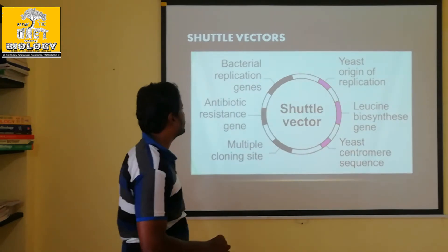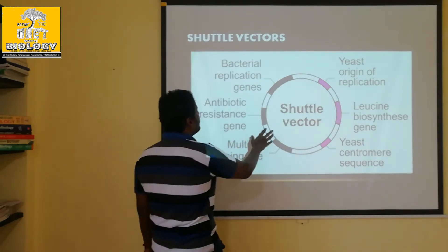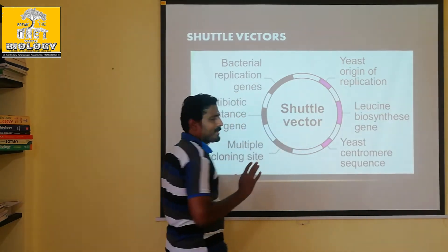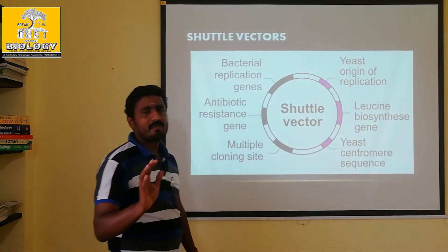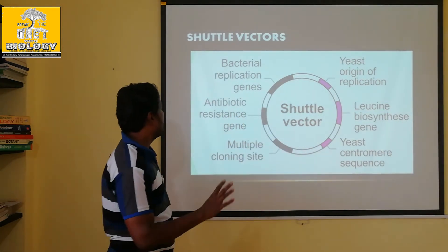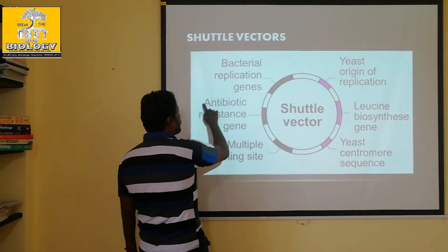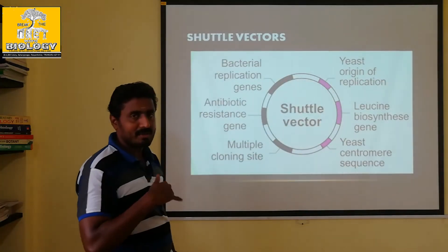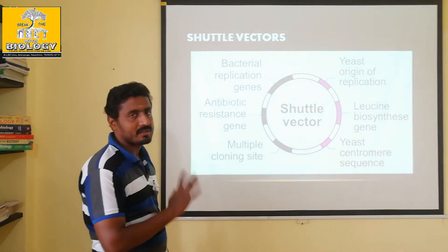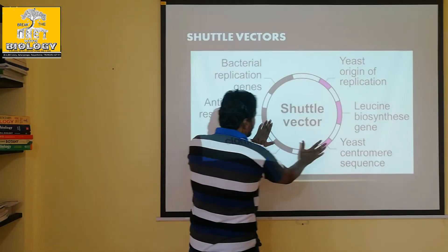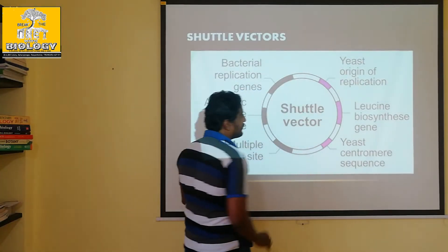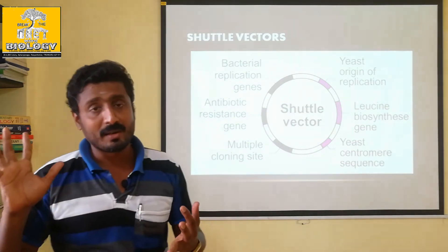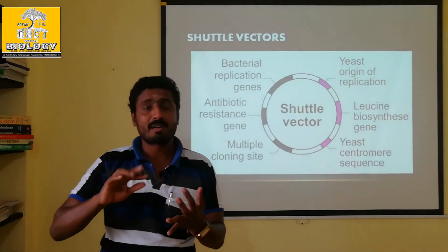This is an antibiotic resistant gene. This is a plasmid modified version — a vector. You can multiply in both bacteria and yeast. This is to advance the characters across two different organisms.